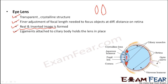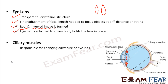Since the ciliary muscles are muscular, they can contract and expand, helping to adjust the focal length of the lens — they can increase or decrease it. If you are not familiar with focal length concepts, you can refer to detailed videos on spherical mirrors and lenses from class 10. The ciliary muscles basically control the curvature of the lens.